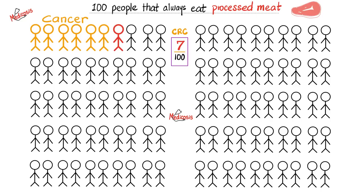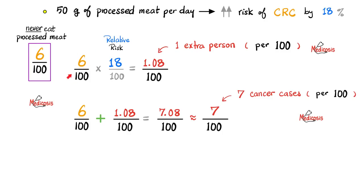But how can we express this in absolute terms? We only see one extra case of colorectal cancer in processed meat eaters. So the absolute risk increase or the attributable risk is only 1%. If we take 6 out of 100 persons who never eat meat and multiply by 18%, we get one extra person per 100 who's going to develop cancer attributed to consumption of processed meat. So you get 6 out of 100, add to that 1 in 100, and you get 7 out of 100 — representing 7 cases per 100 in individuals that eat processed meat.